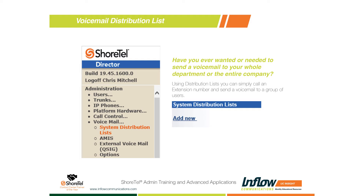So we're allowing hundreds of users access to that one voicemail message without taking up a bunch of extra storage space on the server. To create one, we log into ShoreTel Director, expand the voicemail option, and you'll see the system distribution list option. By default, ShoreTel actually creates a couple — I think they call one 'Staff,' one 'Managers,' one 'Executives.' A lot of our customers just delete those and create custom ones. There's also one called 'Broadcast,' which is how the system does its own system distribution — you won't be able to delete that one.